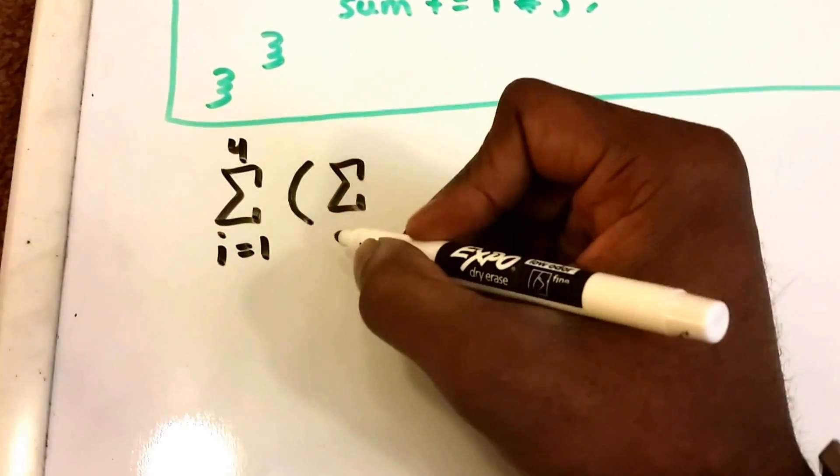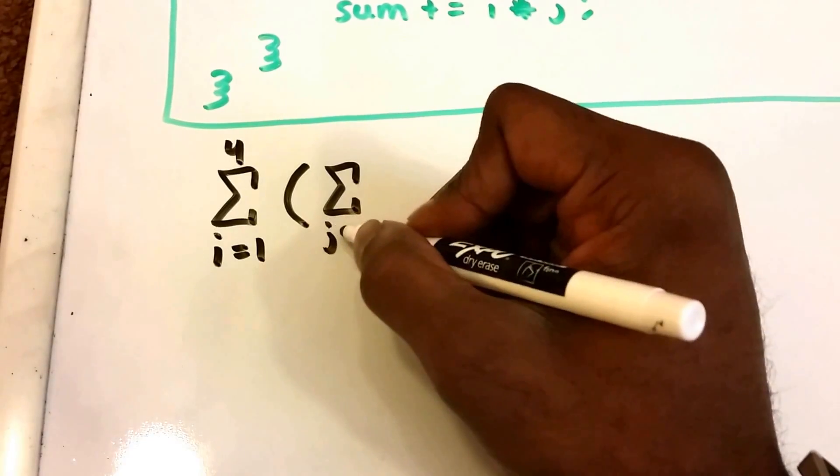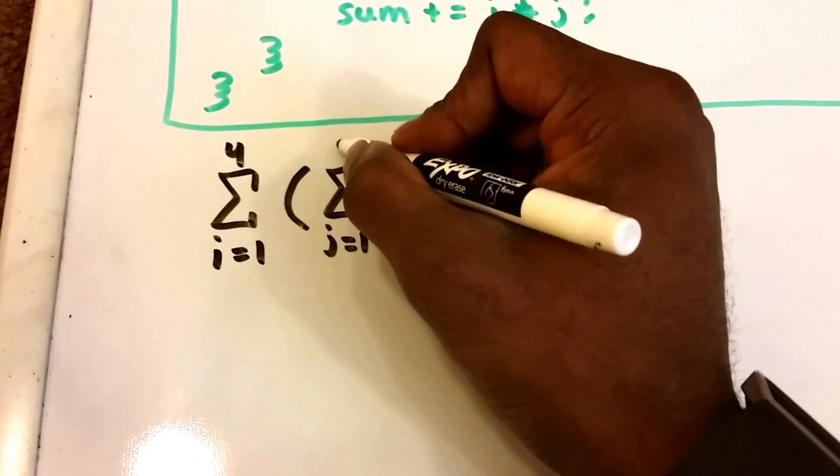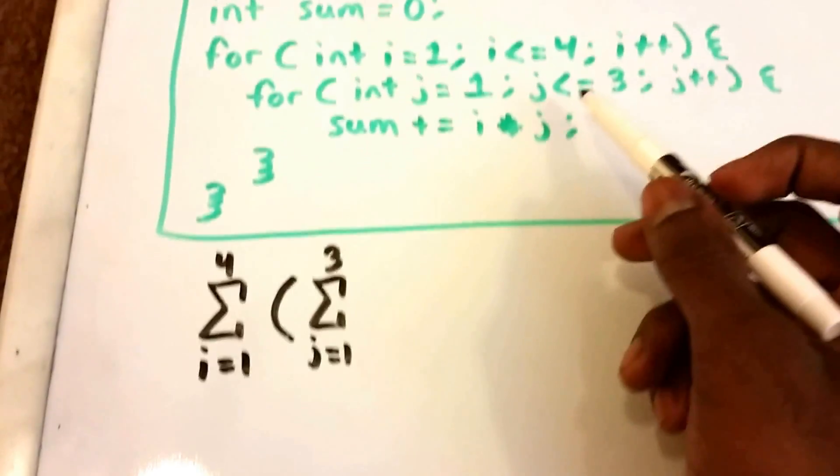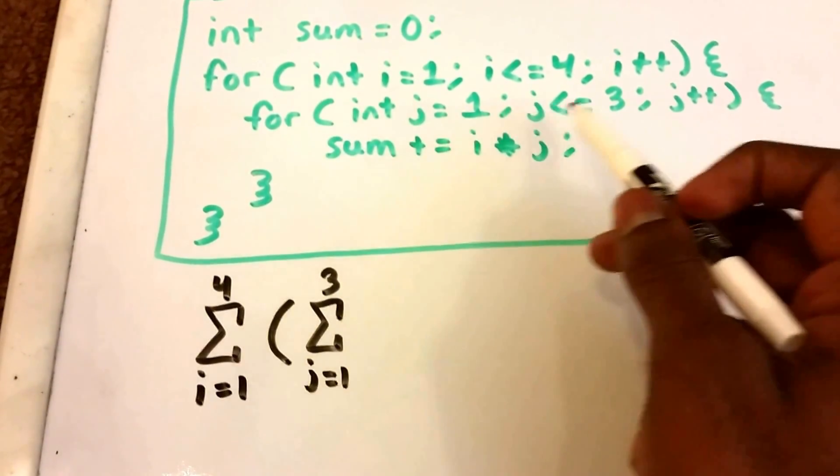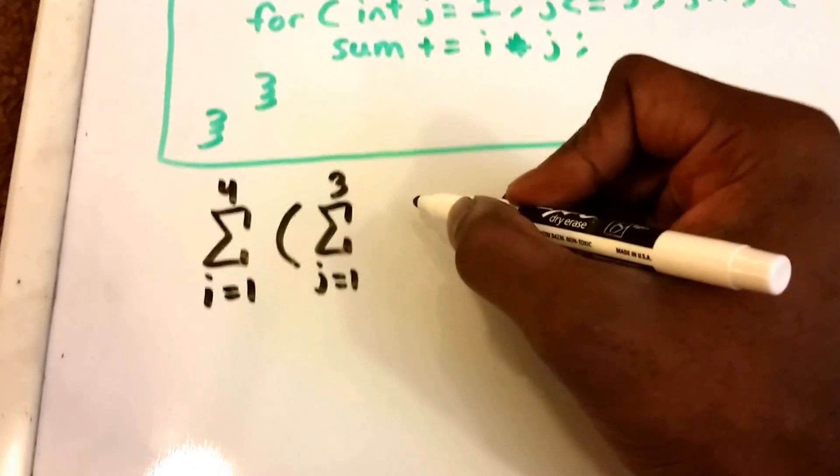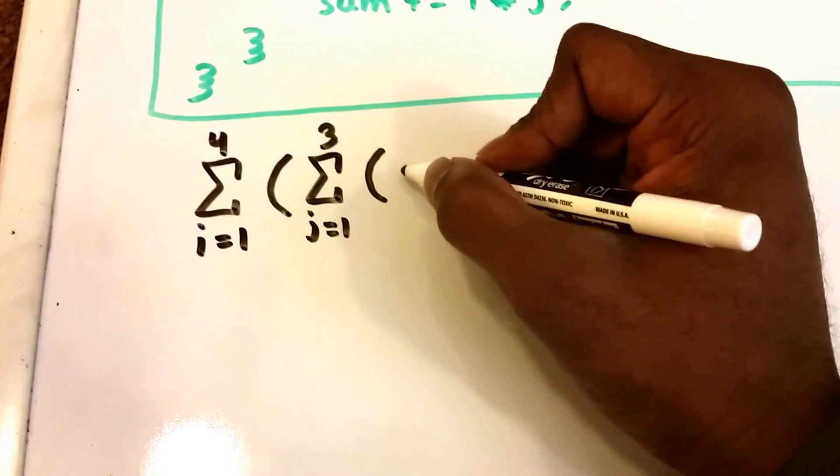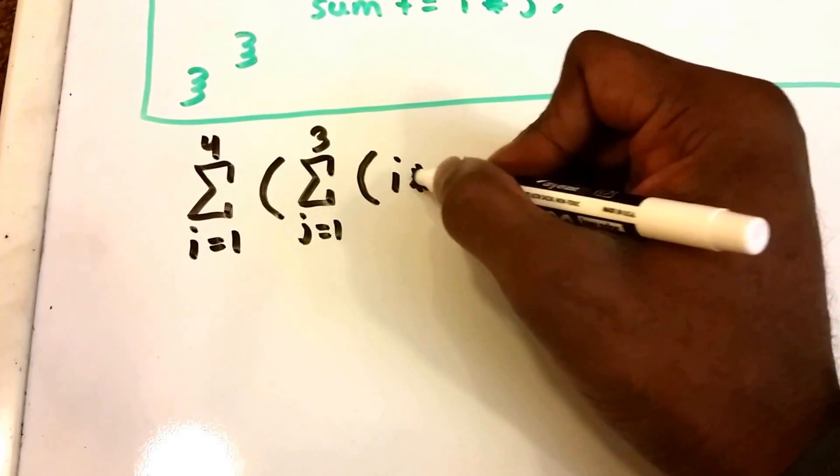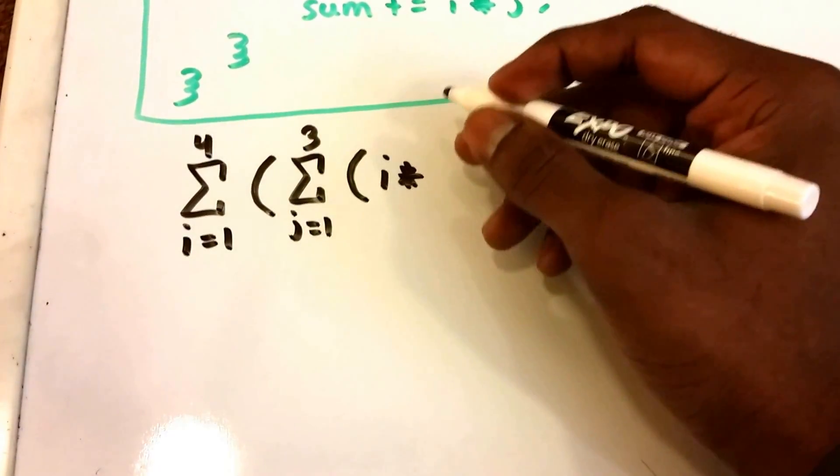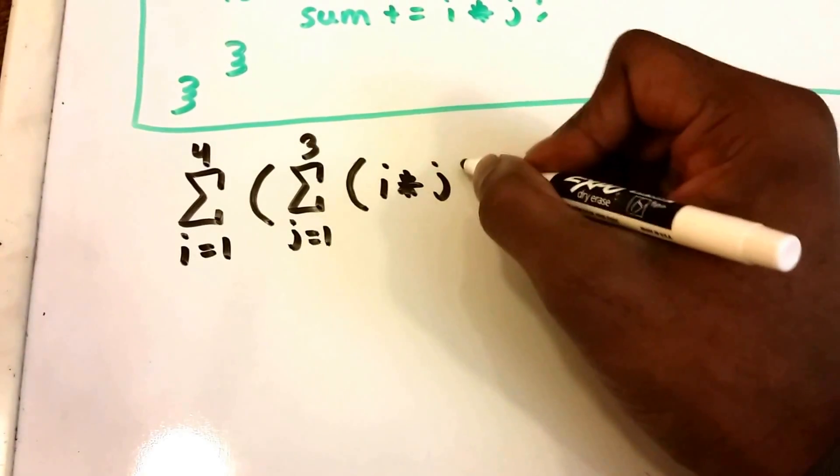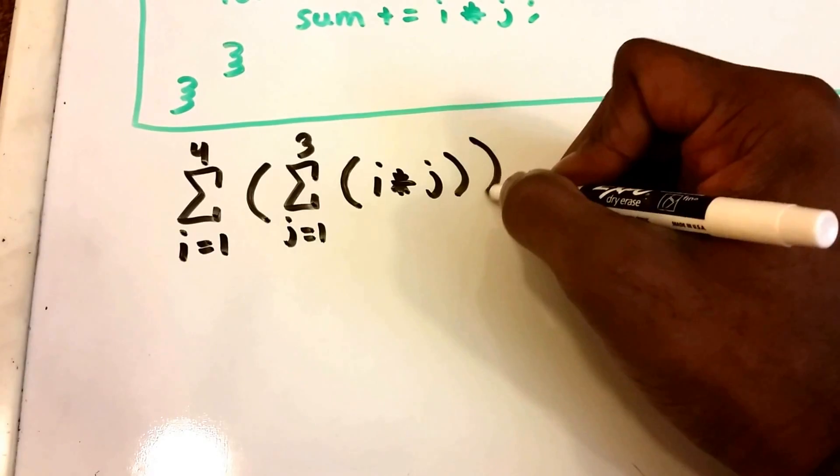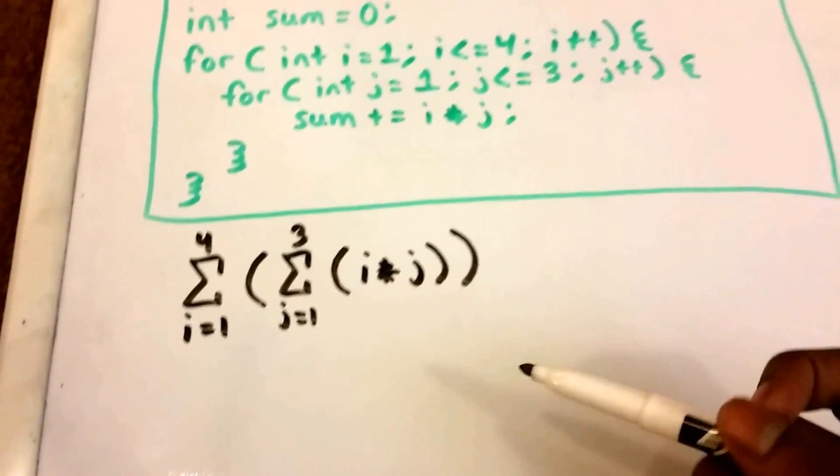And then within that loop, so we're going to have another summation and it's going to run from j equals 1 all the way to 3. And then within that loop we have our sum which is i times, we'll use a little asterisk for times, j. All right, and we're just going to close it like that.